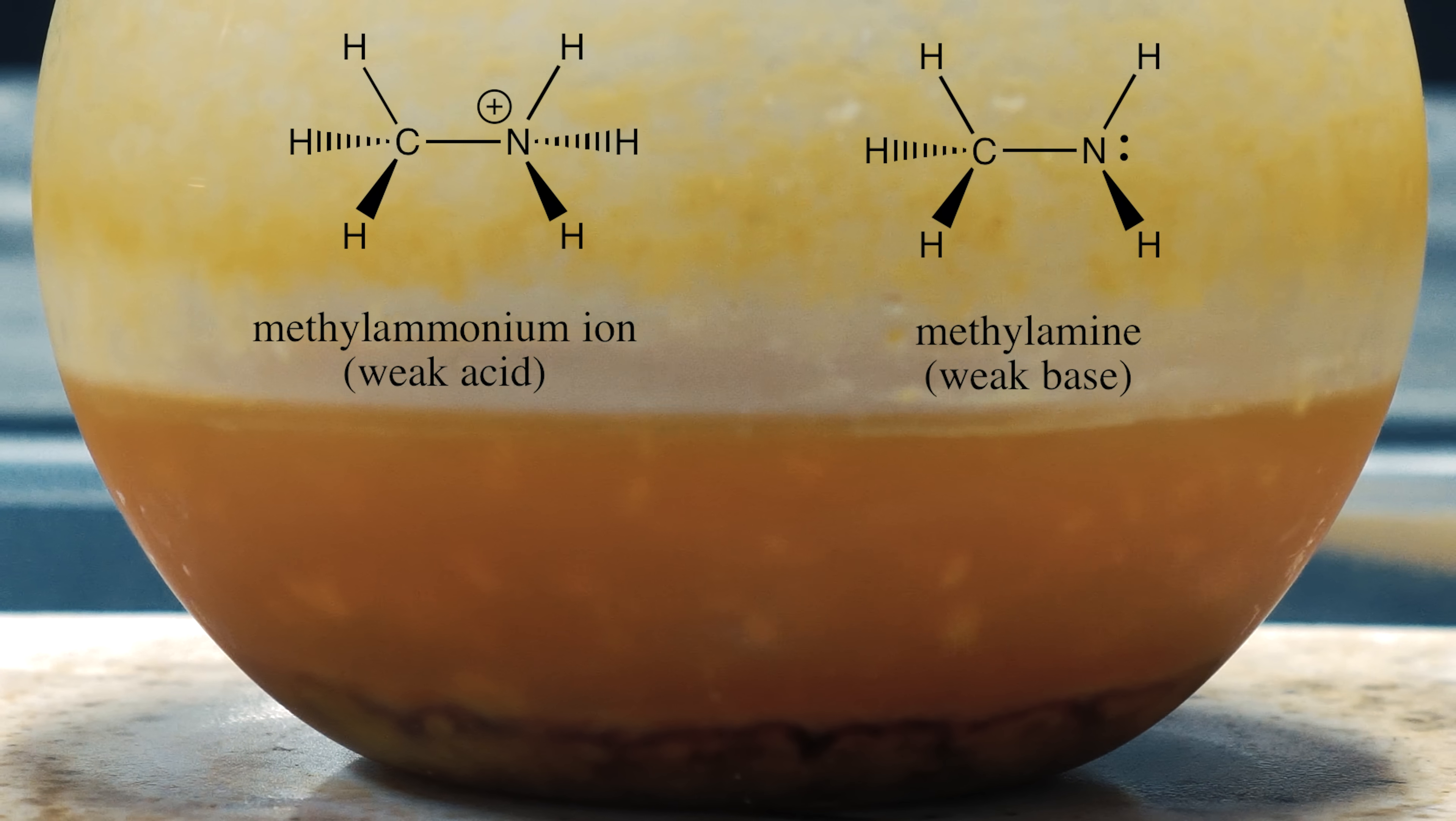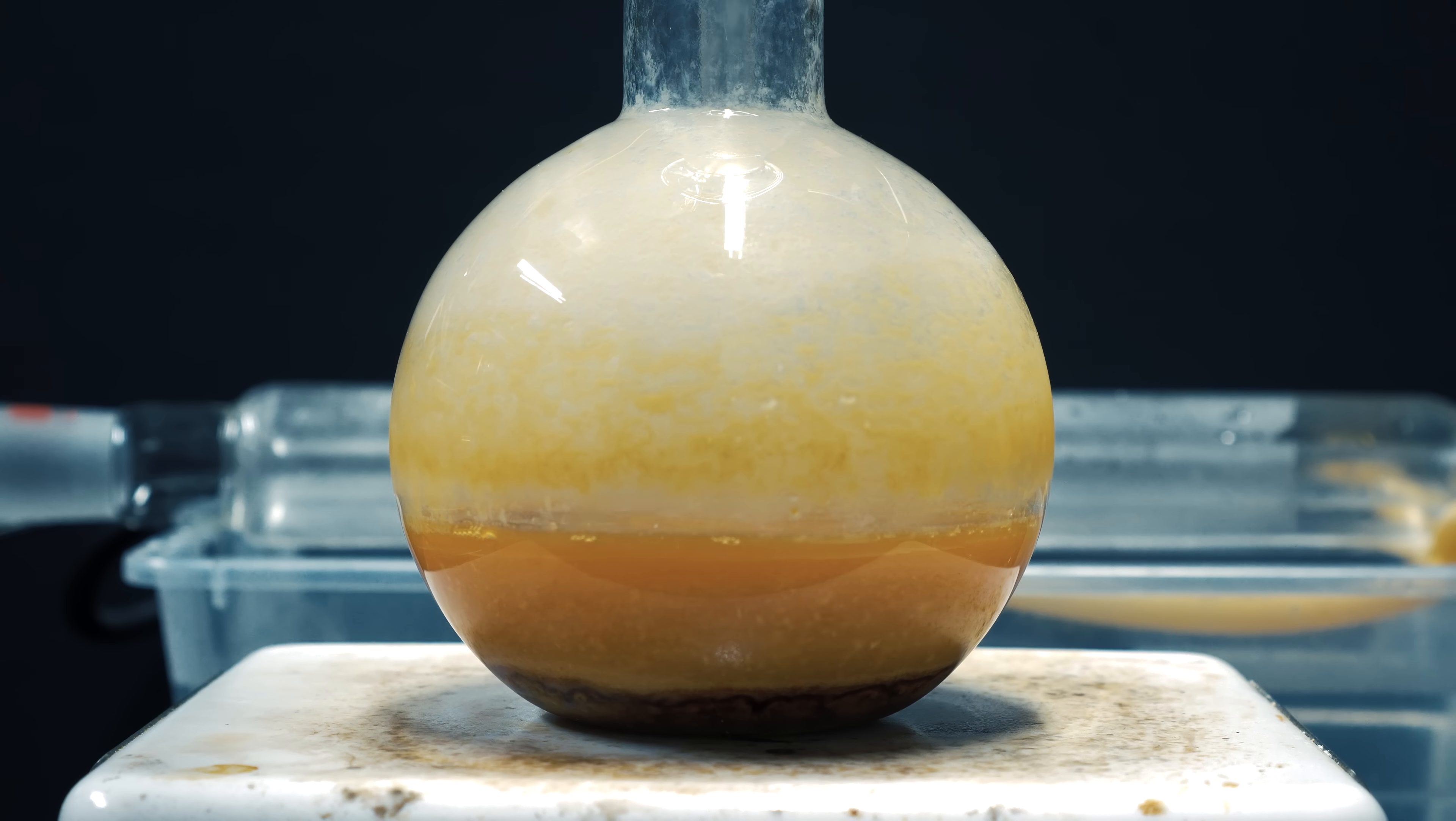Right now, methylamine exists as its conjugate acid, which is the methyl ammonium ion. We need this as methylamine so we can proceed on with the procedure. Once the solution is basic, we're essentially going to get methylamine as a gas as we heat it up. This way, we can just bubble the gas into a solution of hydrochloric acid and get our methylamine HCl.